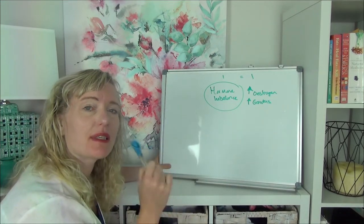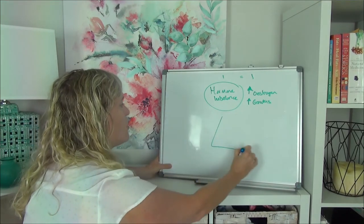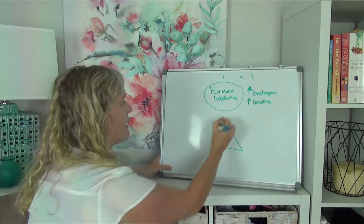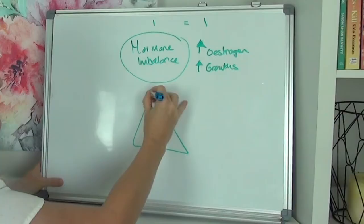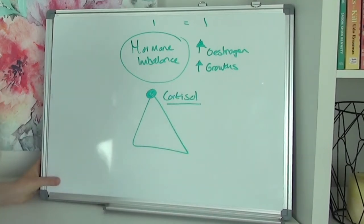The way that yoga specifically addresses hormone imbalance is like this. Your hormones are kind of a little bit like a pyramid, and at the top of that pyramid is cortisol. Cortisol is your stress hormone.